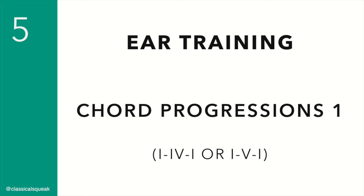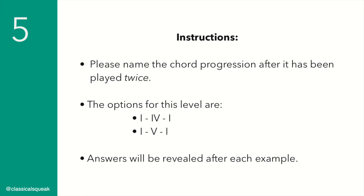Level 5 Ear Training Chord Progressions, Set 1. Please name the chord progression after it has been played twice. The options for this level are 1-4-1 or 1-5-1. Answers will be revealed after each example.